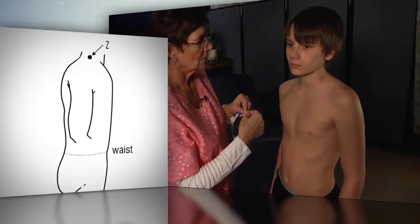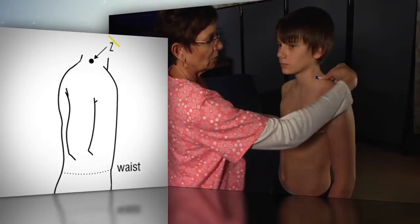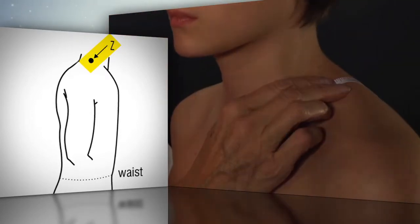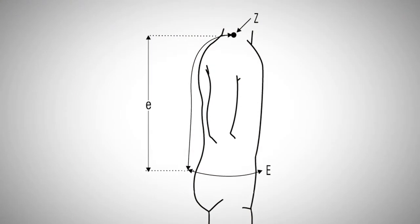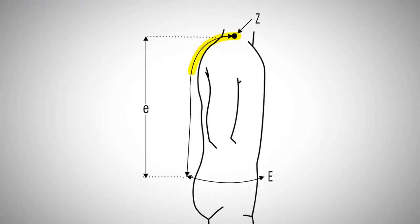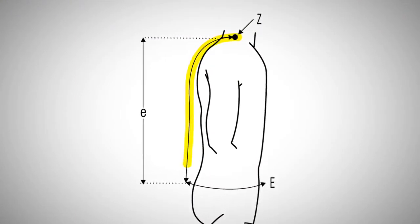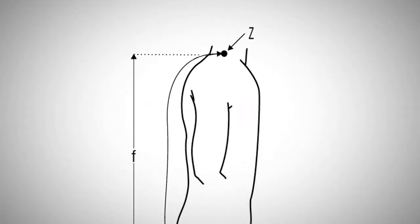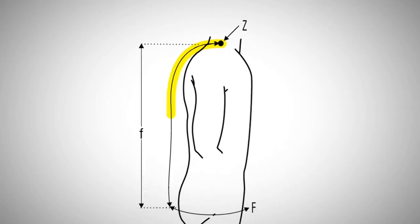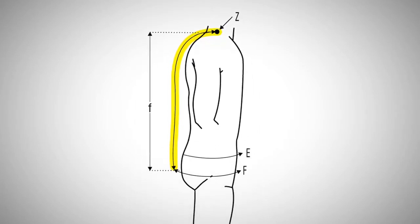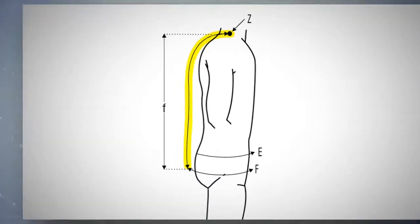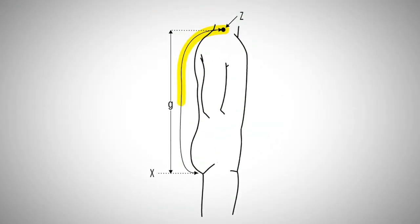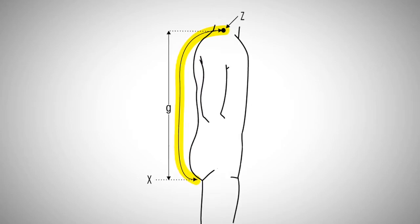For surface measurements for a body brief or body suit, locate point Z at the base of the neck at the top of the bulge of the trapezius. The little e measurement is the distance from point Z to circumference E, just below the waist, measured straight down the back. The little f measurement is the distance from point Z to circumference F, which is located just below circumference E. The little g measurement is the distance from point Z to point X, located at the fold of the buttocks.